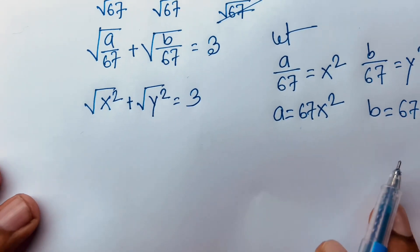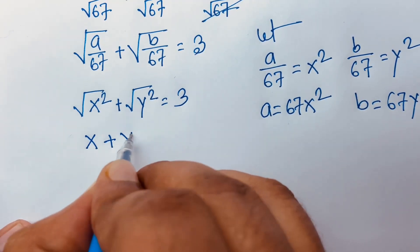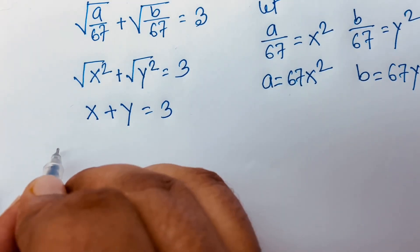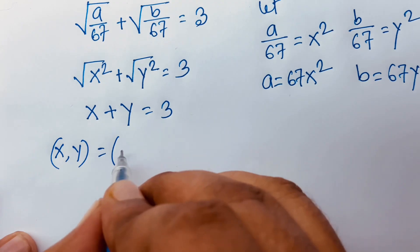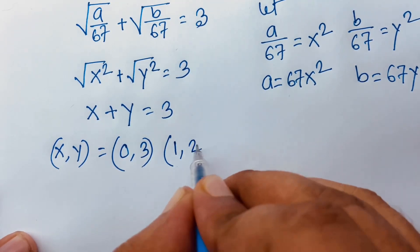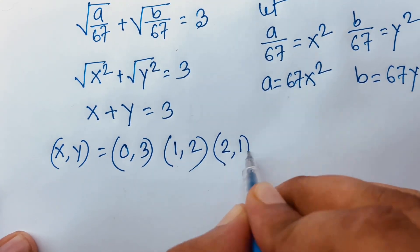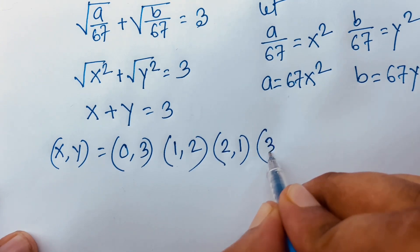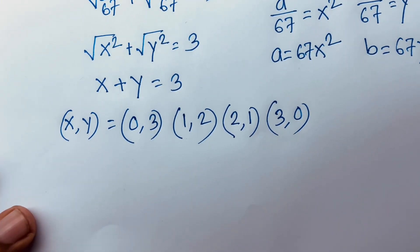So x plus y equals 3. The integer pairs (x, y) that satisfy this are: (0, 3) because 0 plus 3 is 3; (1, 2) because 1 plus 2 is 3; (2, 1) because 2 plus 1 is 3; and (3, 0) because 3 plus 0 is 3.